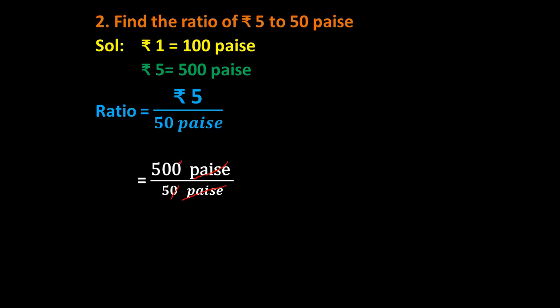Now this paise gets cancelled with paise. This zero gets cancelled with this zero. Five and fifty get cancelled with each other on the table of 5: 5 ones are 5 and 5 tens are 50, so here we get 10 upon 1. So the required ratio is 10 is to 1.